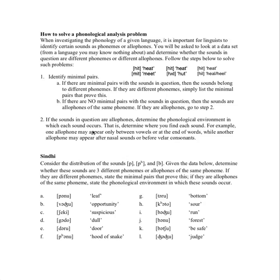That sounds scary, but all you're determining is where you find each sound. For example, one allophone might appear at the beginning of a word, between vowels, or at the end of words. Another allophone might appear just after nasal sounds or before velar consonants. A phonological environment is really just a fancy way of saying where do you get one sound and where do you get the other. Let's walk through this first data set here, which is from the language Sindhi.